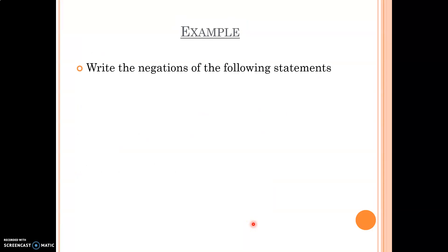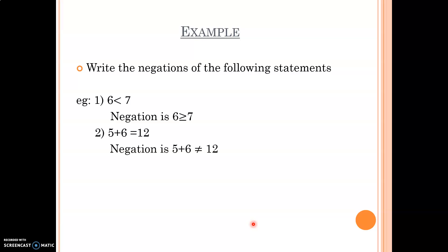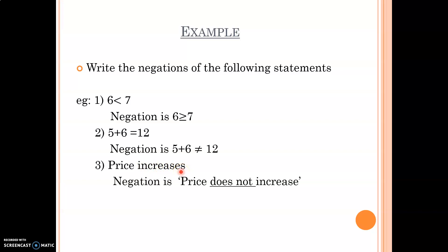Write the negations of the following statements. First: '6 < 7'. You change the symbol, so the negation is '6 ≥ 7'. Second: '5 + 6 = 12'. You replace the equals sign with not-equal-to, so the negation is '5 + 6 ≠ 12'. Third: 'Price increases.' This is important — there is no auxiliary verb, it uses simple present tense. So the negation is 'The price does not increase'.